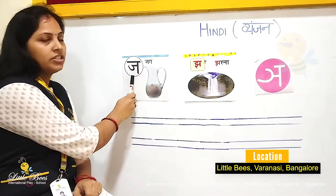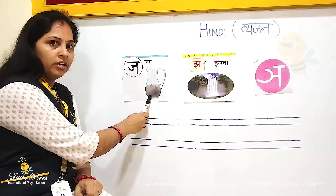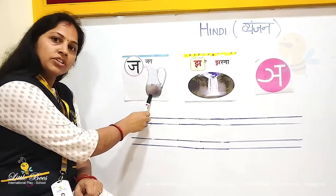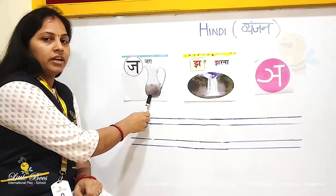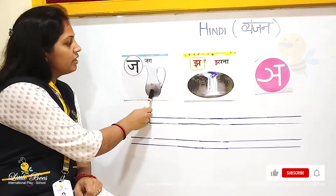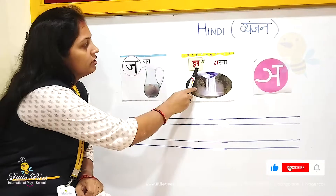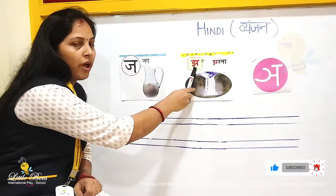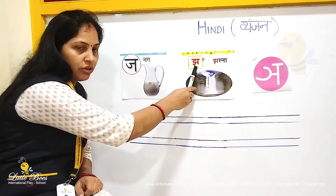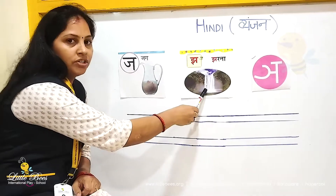This is Jha. Say Jha. It means Jha — in English also we say Jha. Say Jha. You have to stress it a little: Jha.